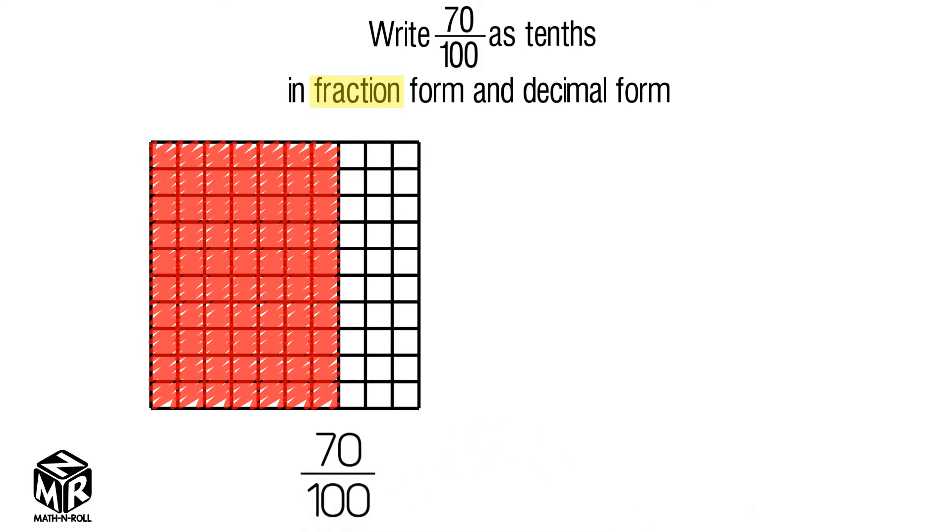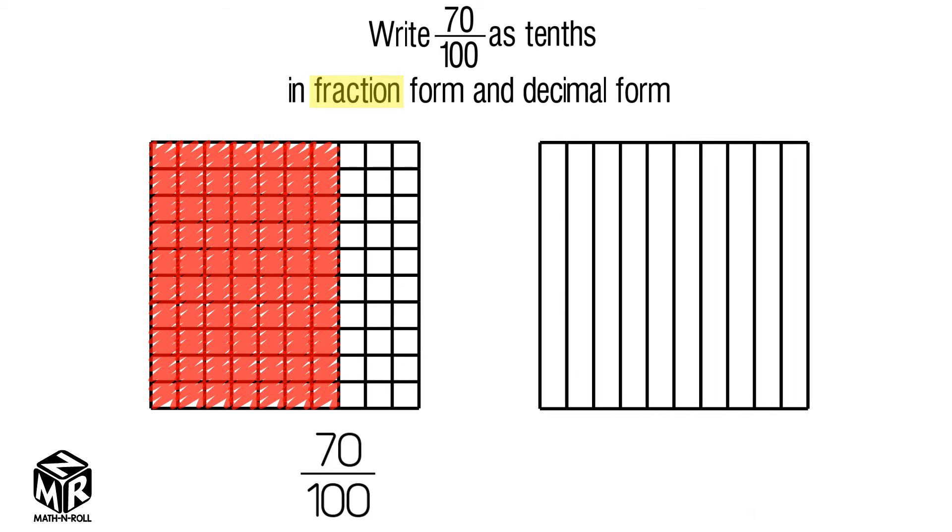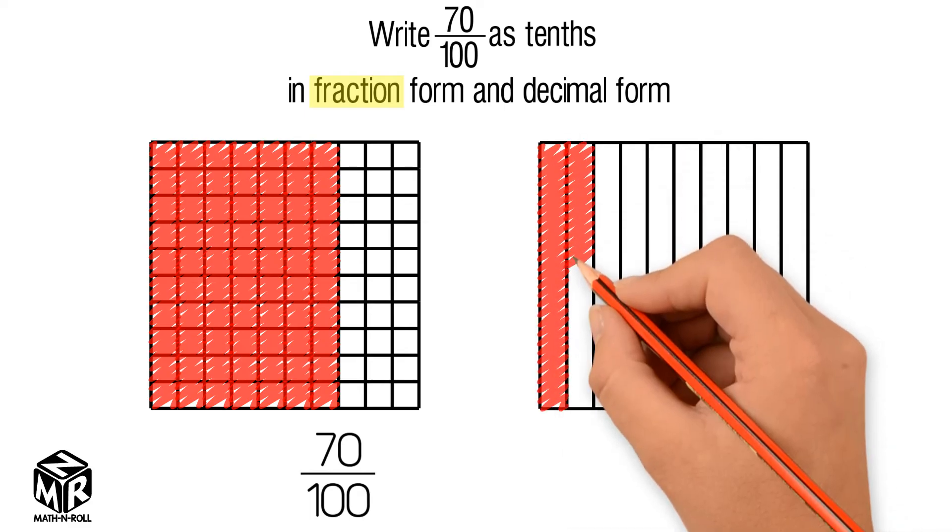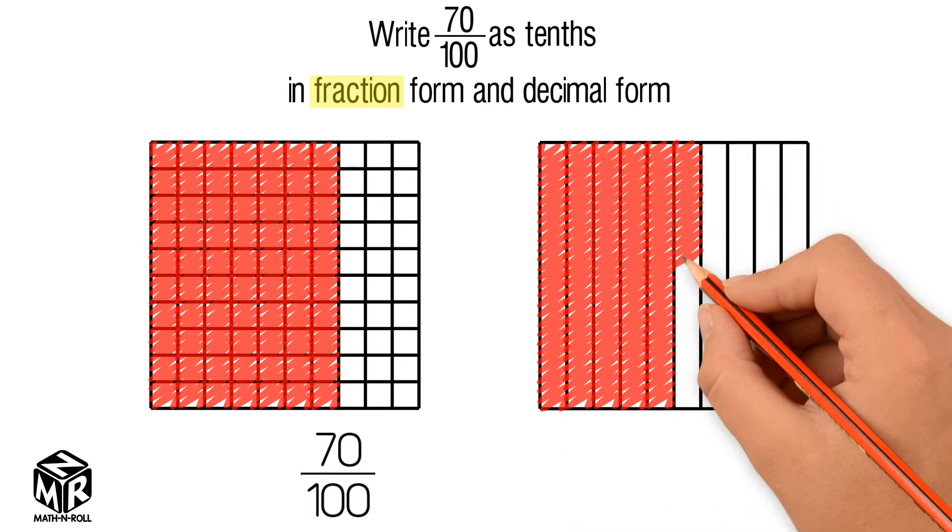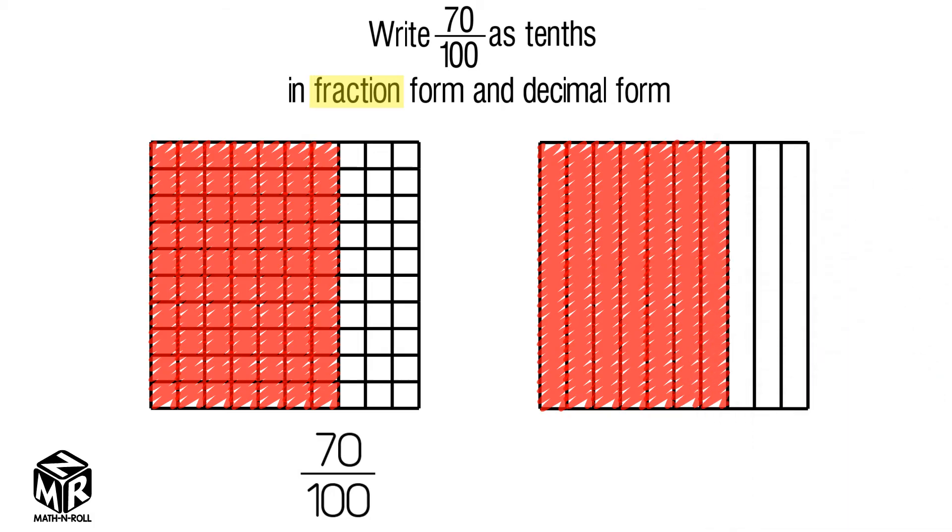We have to write 70 hundredths as tenths, so we take the same model but divide it into 10 parts. Shade in 7 columns. We see that the area of the two shaded parts are the same.